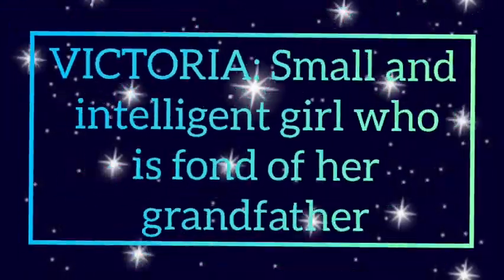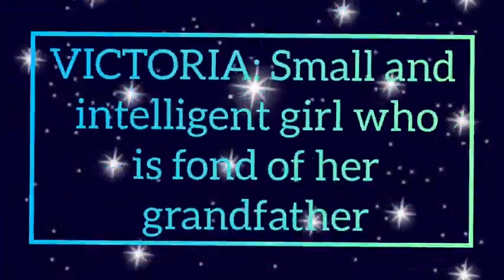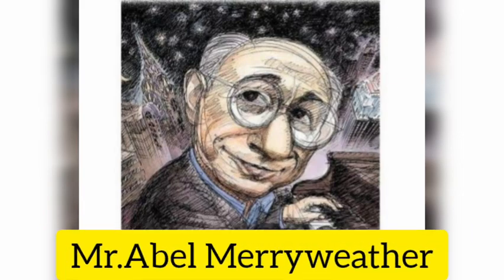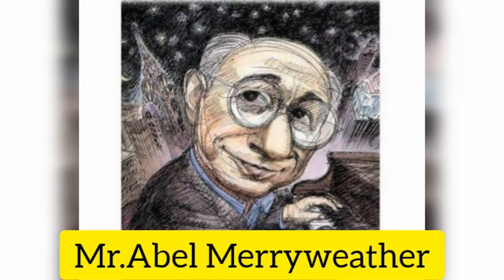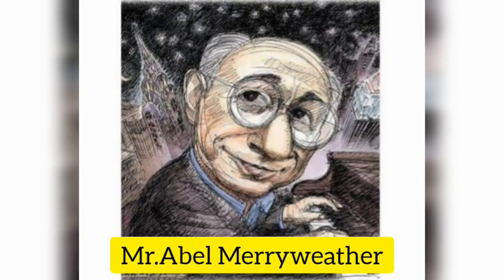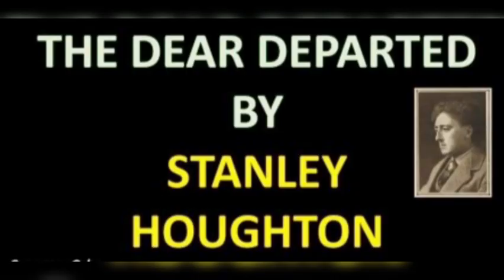Mrs. Slater gives an answer which shows her cheap-mindedness: she says they come only to discuss the property and possessions belonging to their father, since he has now passed away and his things should be shared between both daughters. That is the reason for her sister's arrival. Their father, Abel Merryweather, had passed away, and Mr. Slater sent a telegram informing everyone, after which both Mr. and Mrs. Jordan arrived.